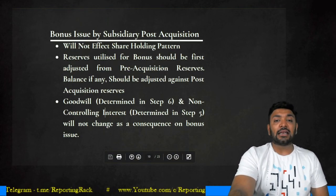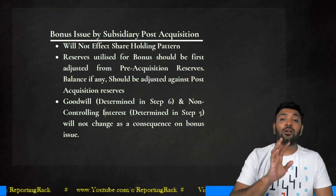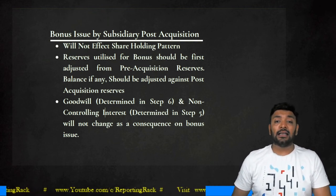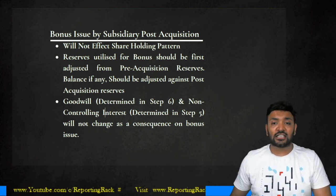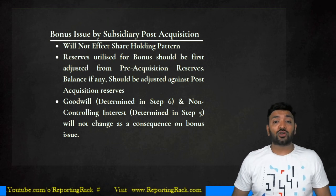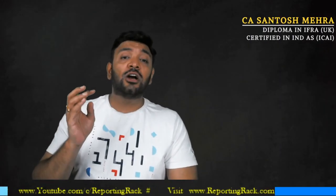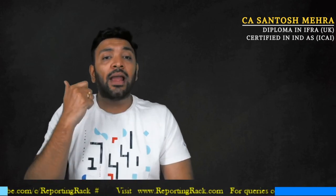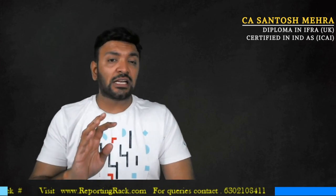These are the two general adjustments — revaluation and bonus issue — which appear in consolidation apart from adjustments for multiple dates of acquisition and intercompany transactions. We can now start solving consolidation problems. There are still topics to cover, including disposal of subsidiary and associates and joint ventures under the equity method, but we are sufficiently educated to begin working through consolidation problems.